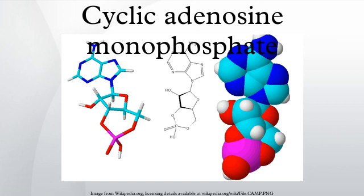Cyclic AMP binds to specific locations on the regulatory units of the protein kinase and causes dissociation between the regulatory and catalytic subunits, thus enabling those catalytic units to phosphorylate substrate proteins. The active subunits catalyze the transfer of phosphate from ATP to specific serine or threonine residues of protein substrates.